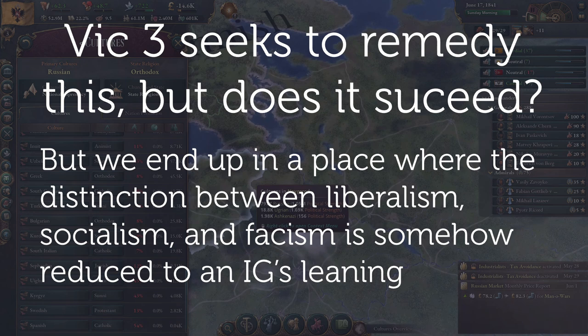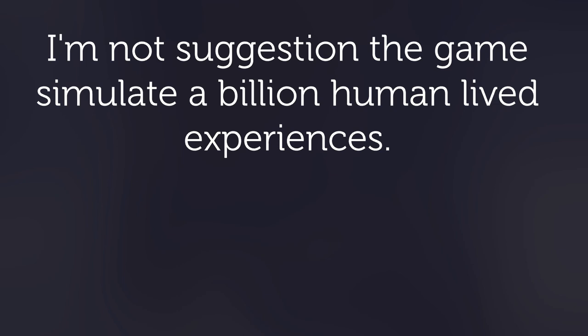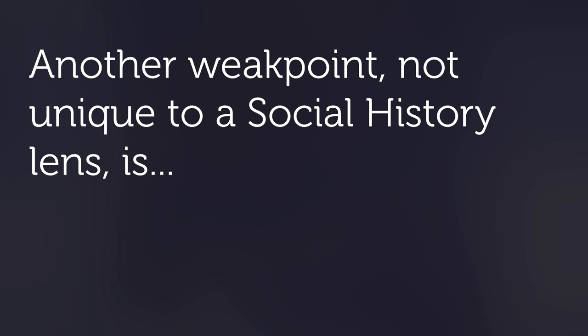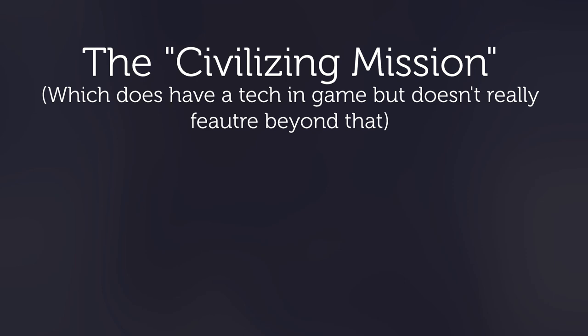A weak point of social and material history is explaining why an individual's interests might extend beyond their own material condition. In Victoria 2, a highly conscious aristocrat would always be a slavery-endorsing monarchist. But in reality, we know of historical examples of very aware nobles who sided with the French Revolution — not out of self-preservation nor selfless martyrdom, but because they believed in the political project. In a different world, by virtue of its construction around interest groups, Victoria 3's materialist lens falls into a bind.